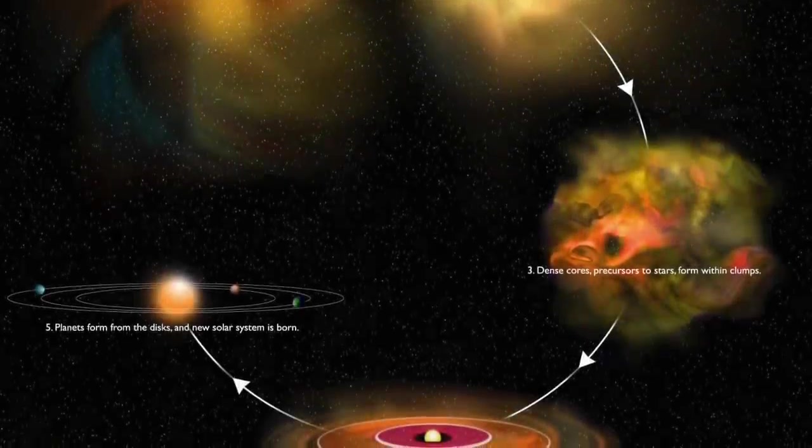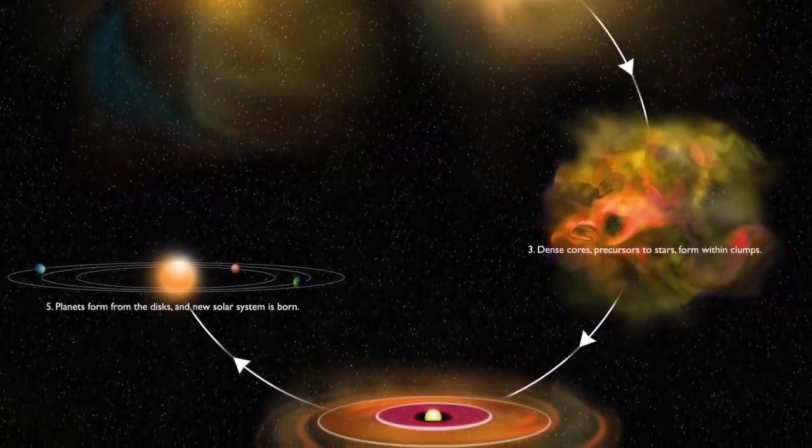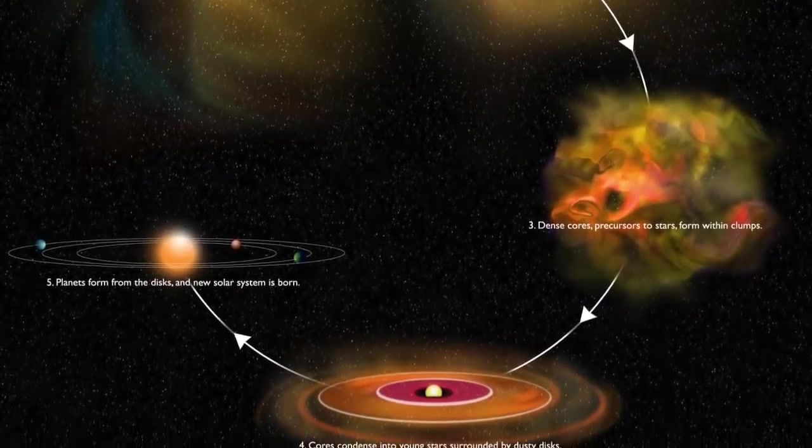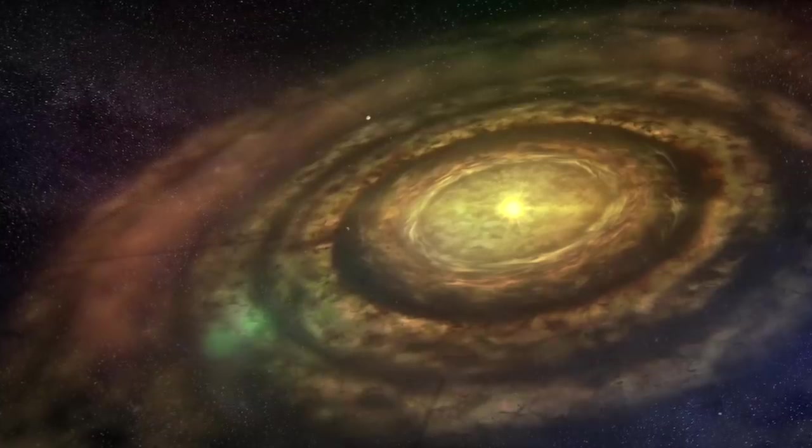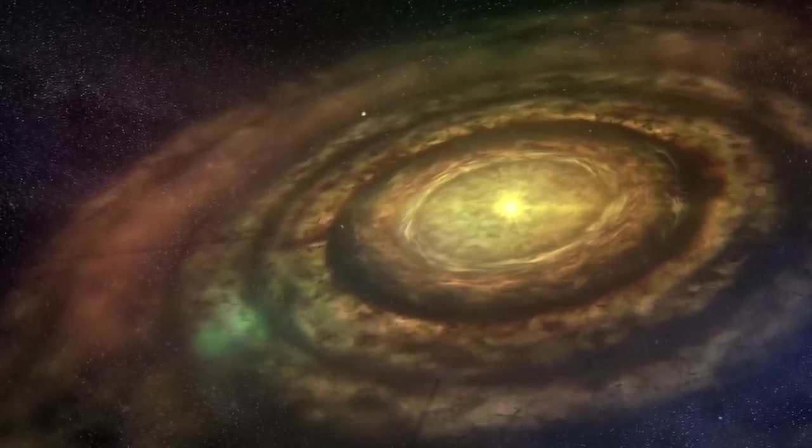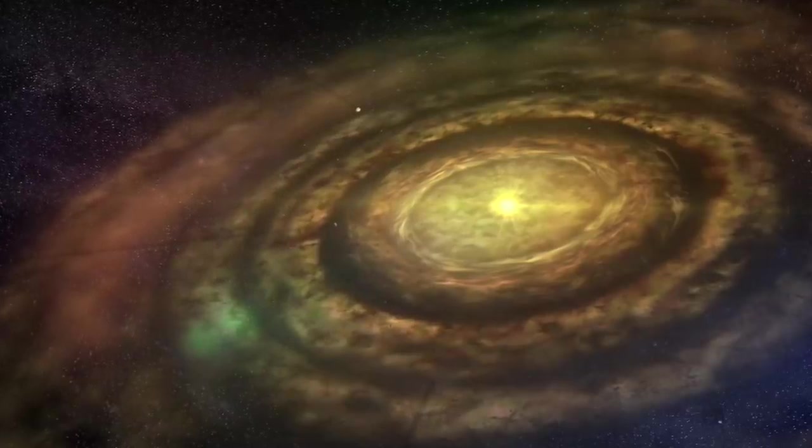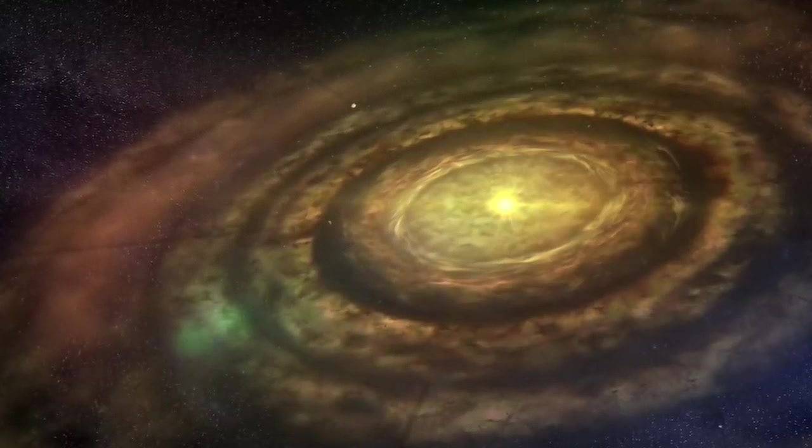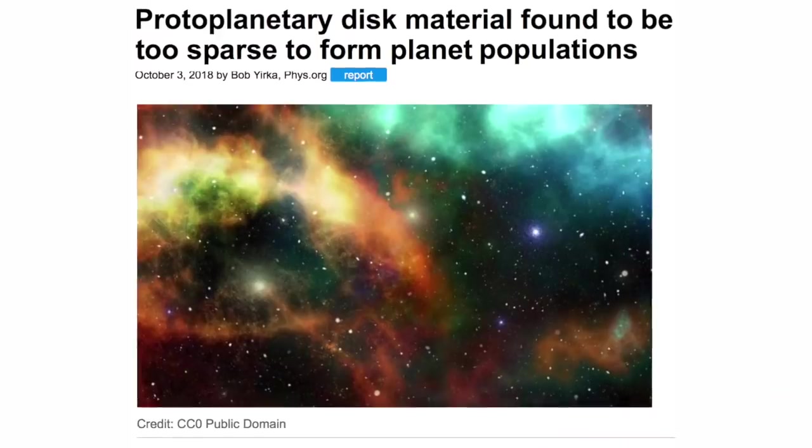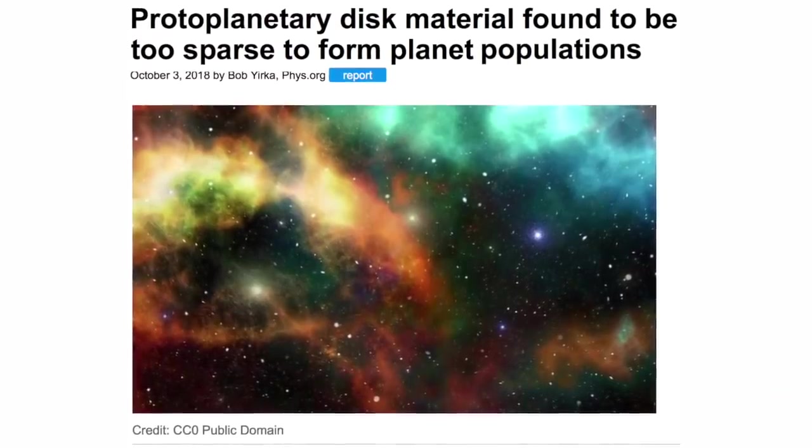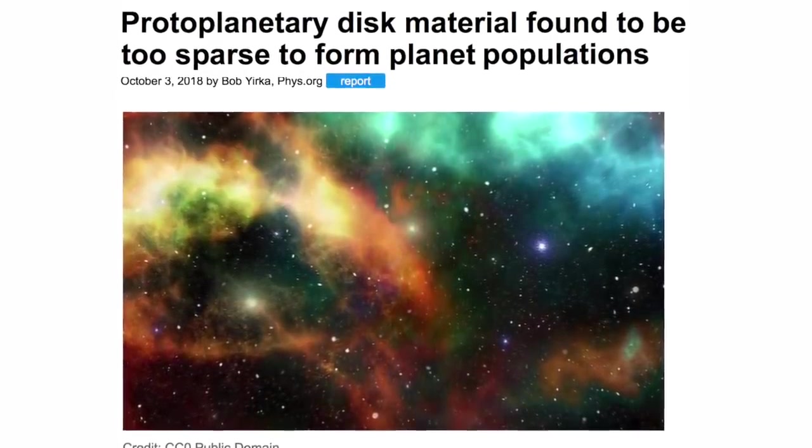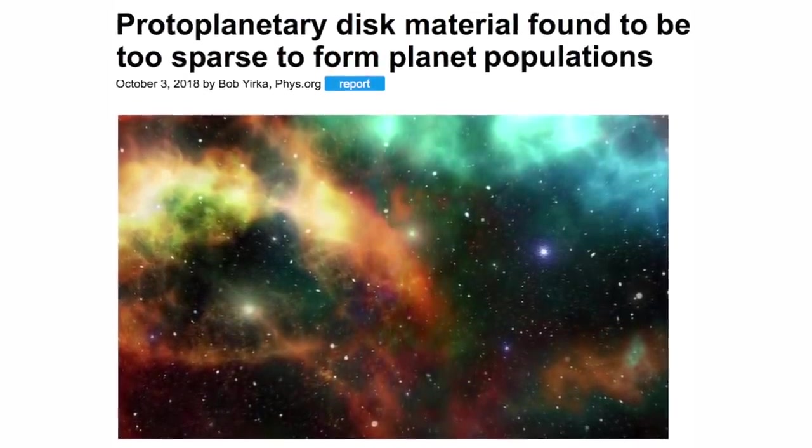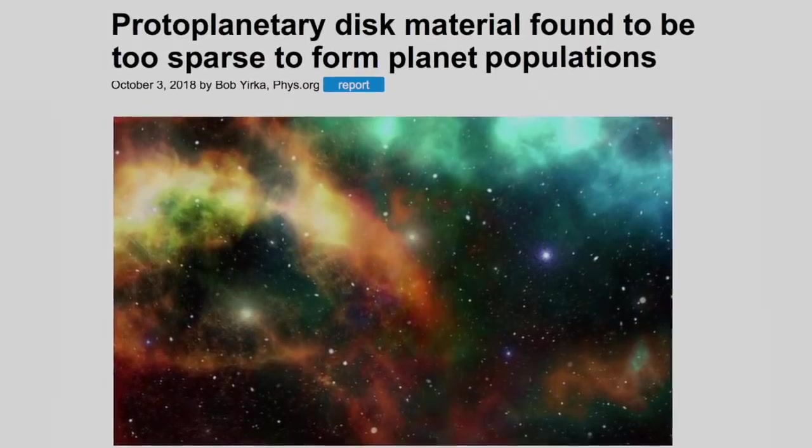We have reported on numerous discoveries which defy the belief in gravitational accretion at all scales in the cosmos, including in the formation of comets, asteroids, planets and stars. Indeed, scientists observing the disks of material around so-called young stars recently reported that the material required to form planets simply isn't there. We asked Dr. Scott his thoughts on the notion of a so-called accreting neutron star.